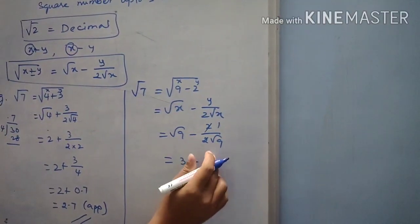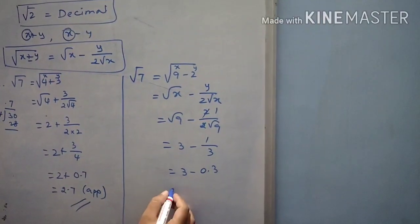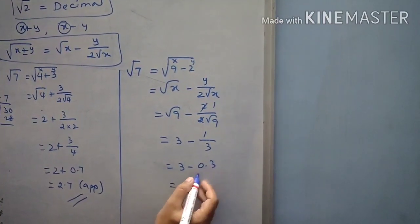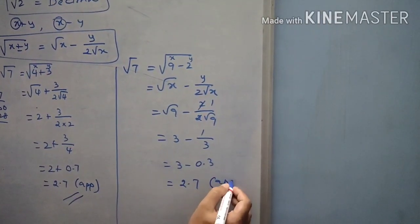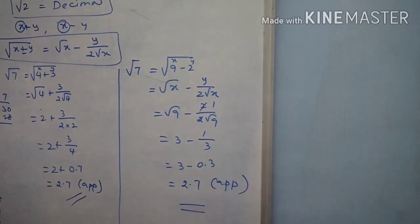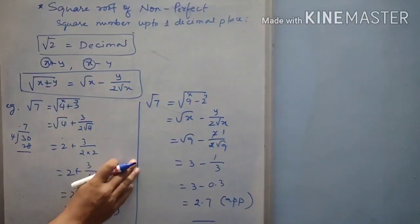3 minus 1 divided by 3, answer will be 0.3 something. It will be going on. Then, from the 3, if I subtract 0.3, it will get 2.7 approximately. So, this is how we are going to find the square root of any non-perfect square number up to 1 decimal place.